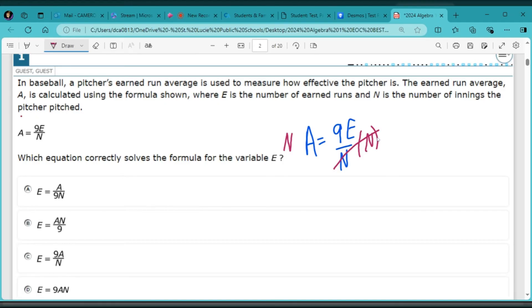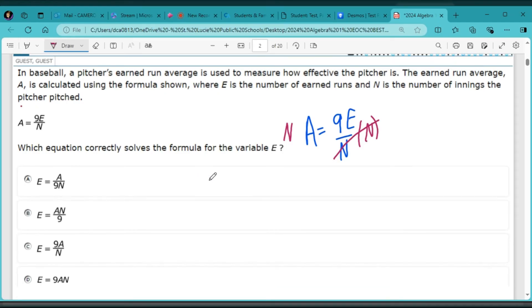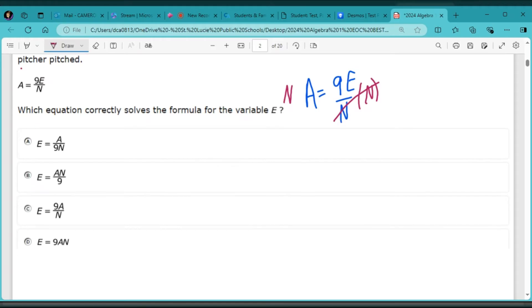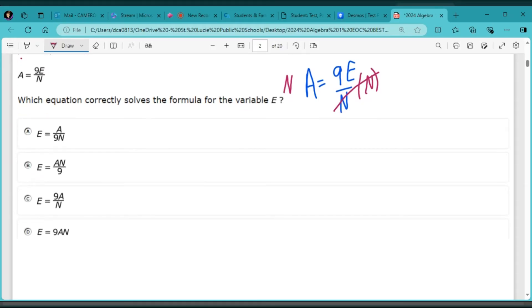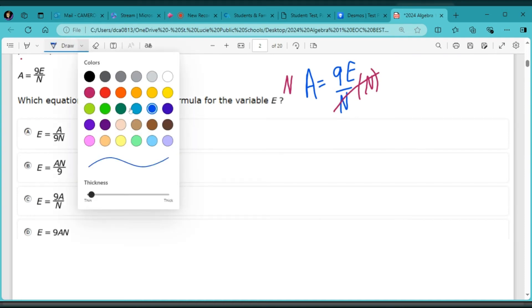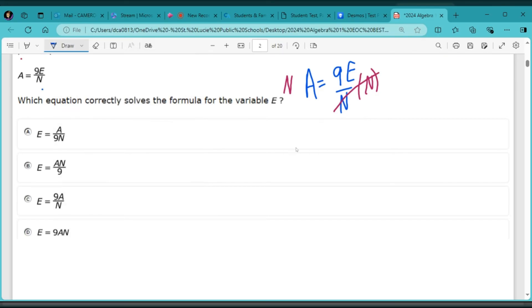Now I'm going to rewrite it underneath. I don't really need that word problem information up top. I know where I'm going. We're just rearranging variables. Now I have NA equals 9E.